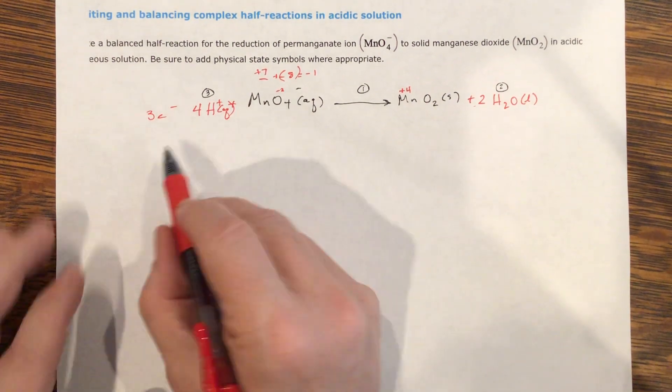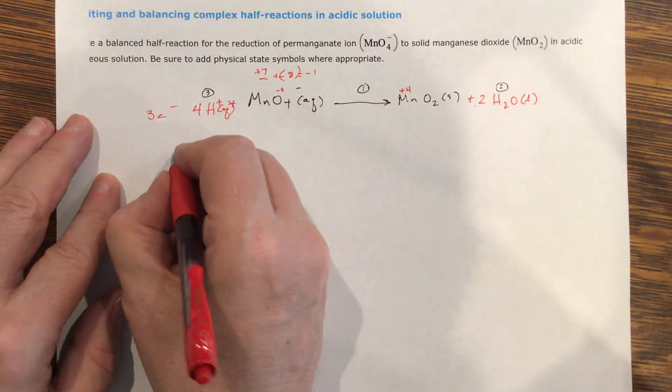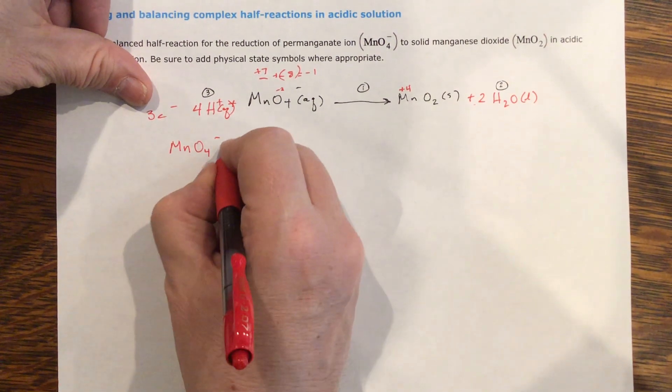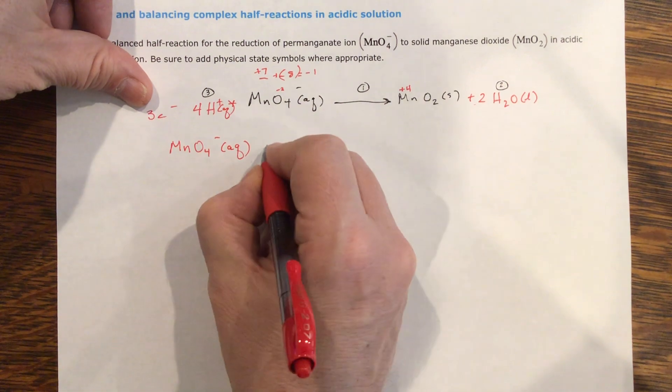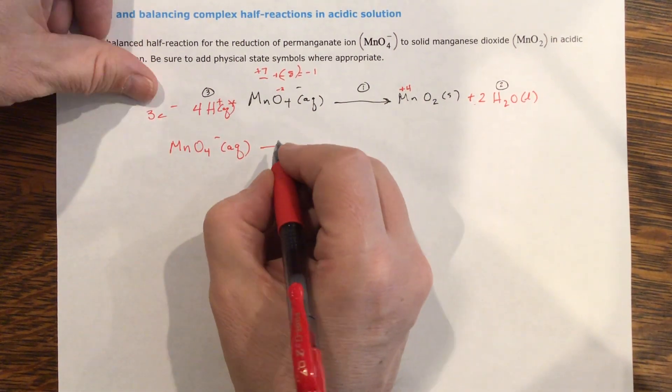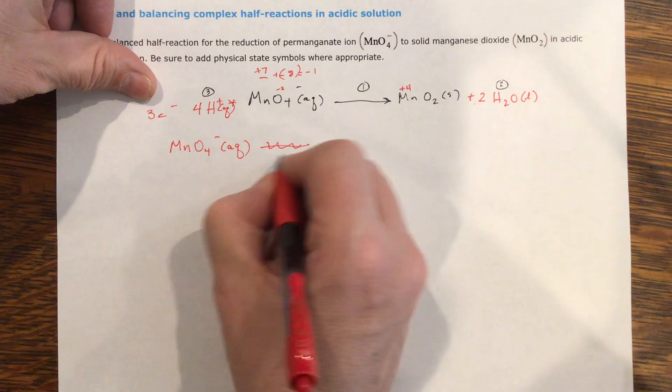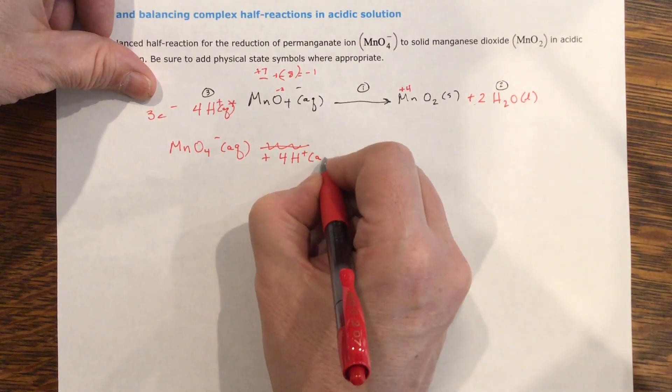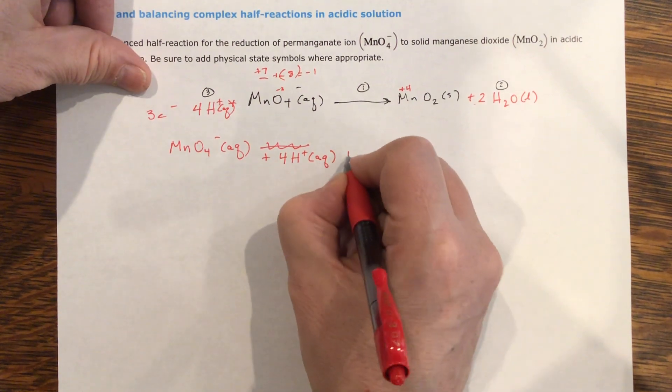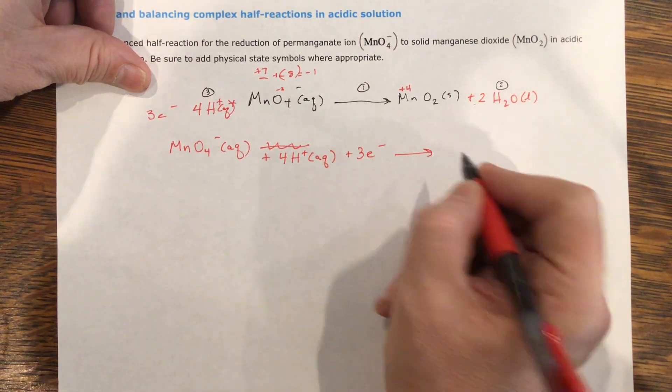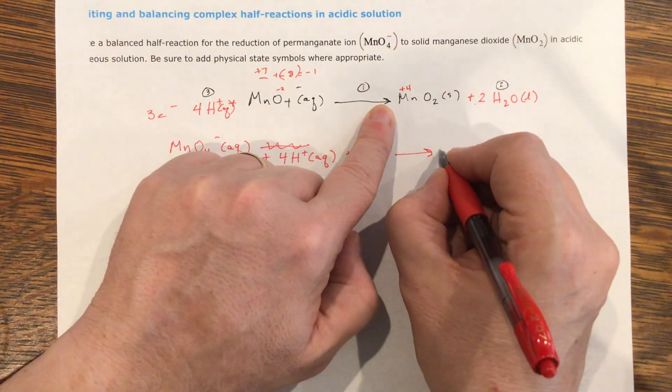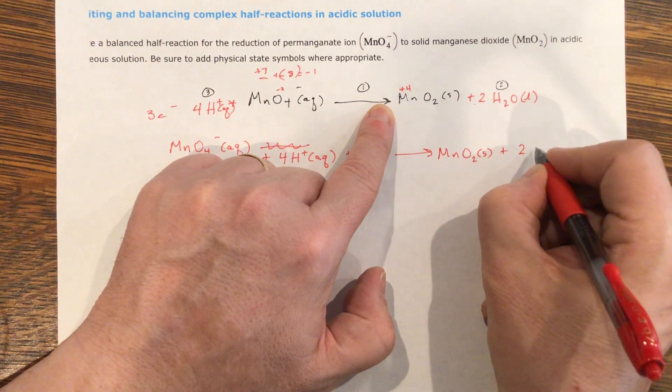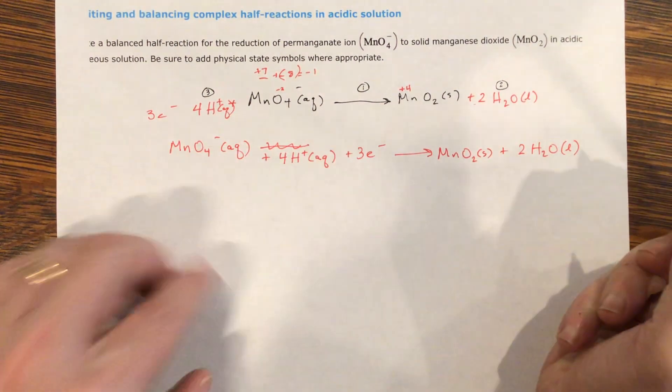So my answer then, let me rewrite. I'll rewrite kind of nice. This is MnO4 minus aqueous, plus 4H plus aqueous, plus 3 electrons, yields MnO2 solid, plus 2H2O liquid.